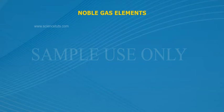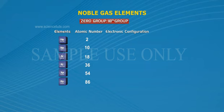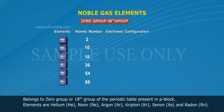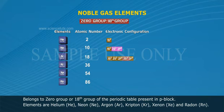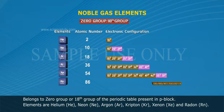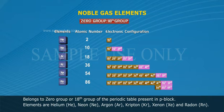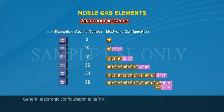Noble gas elements — also called inert gases or rare gases — belong to the zero group or eighteenth group of the periodic table, present in the P-block. The elements are Helium (He), Neon (Ne), Argon (Ar), Krypton (Kr), Xenon (Xe), and Radon (Rn). Their general electronic configuration is ns² and p⁶.